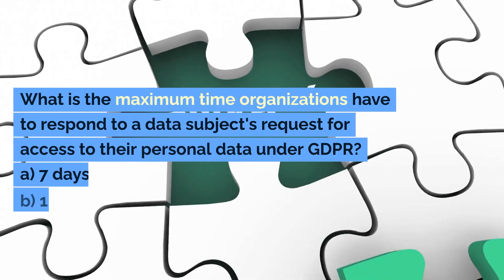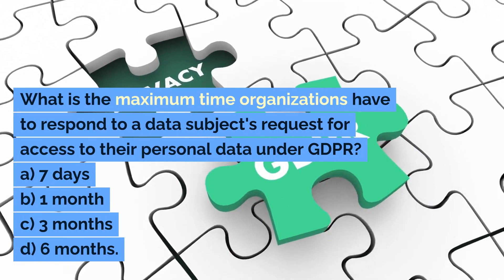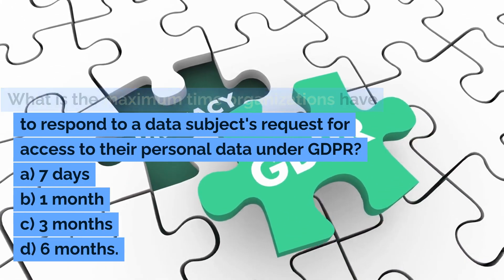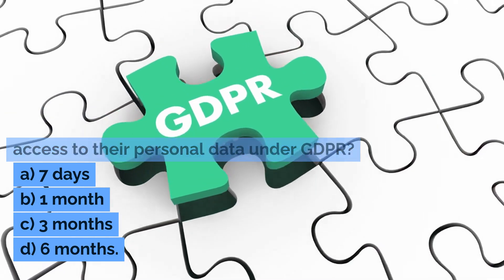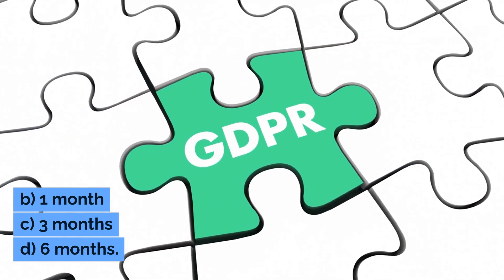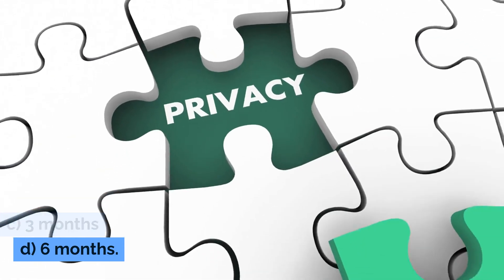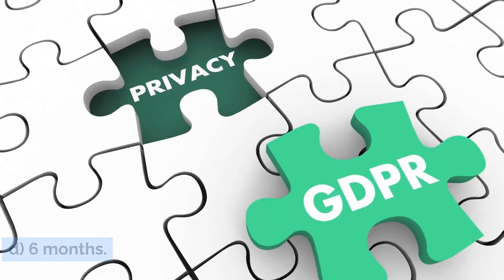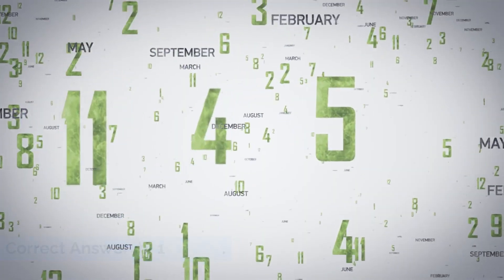What is the maximum time organizations have to respond to a data subject's request for access to their personal data under GDPR? A. 7 days. B. 1 month. C. 3 months. D. 6 months. Correct answer: B. 1 month.